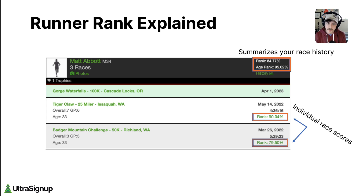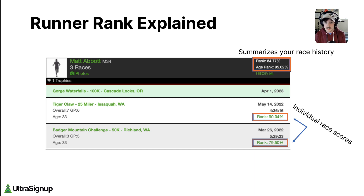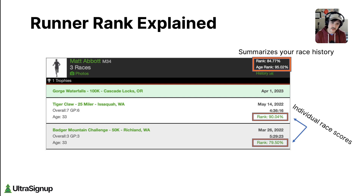Rank is based on your time compared to the fastest time in your gender division — men are ranked against men, women are ranked against women. And for timed events like a 24-hour race, rank is your distance compared to the longest distance completed in your gender division. Age rank is basically the same thing, but it's grouped by both your age division — 30 to 39 in my case — and your gender division, so my time is compared to other 30-to-39-year-old men.